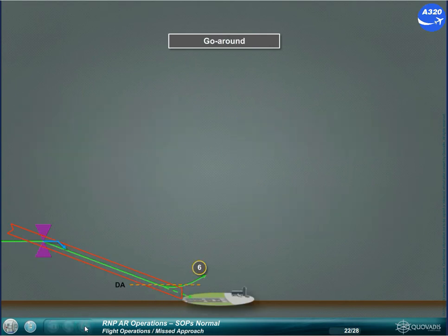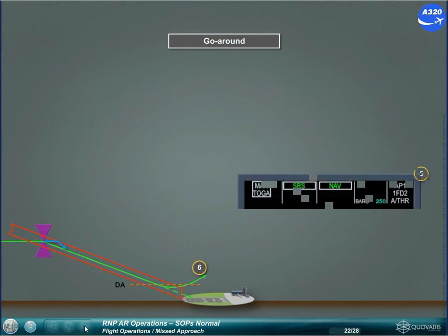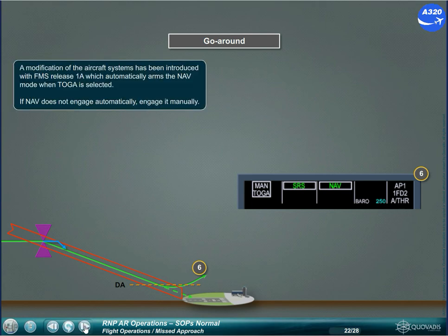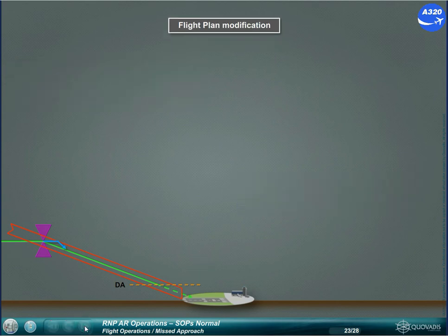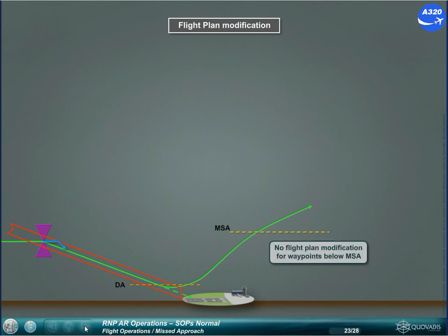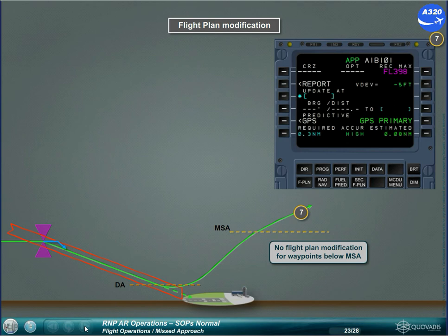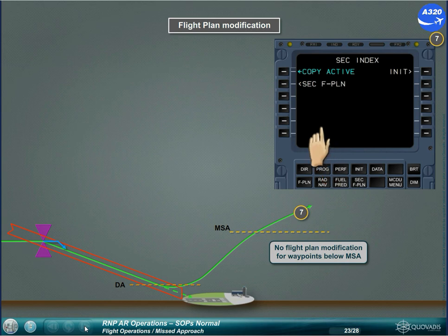A modification of the aircraft systems has been introduced with FMS release 1A, which automatically arms the navigation mode when TOGA is selected. If NAV does not engage automatically, engage it manually. No modification of the flight plan part where the waypoints will be crossed below MSA. In case of a flight plan revision, e.g., new destination, copy the active flight plan into the secondary before the revision is made, to be able to retrieve the original flight plan if needed.